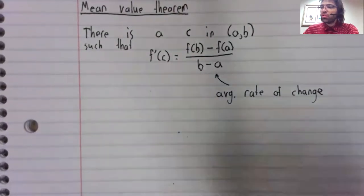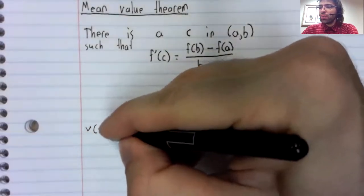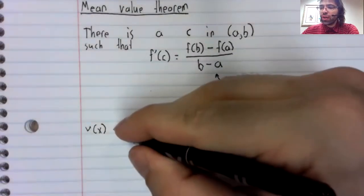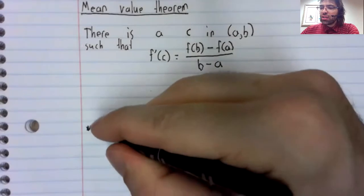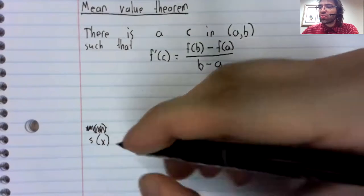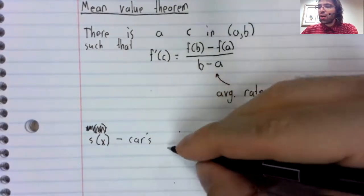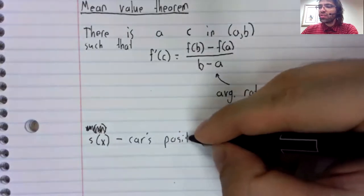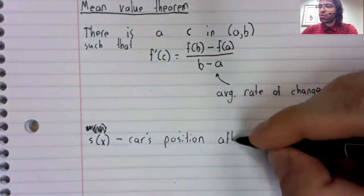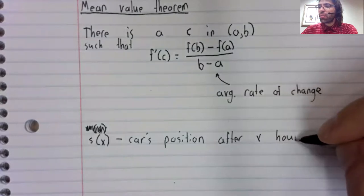Suppose we are talking about a moving vehicle. Let's say that s of x is a car's position after x hours.